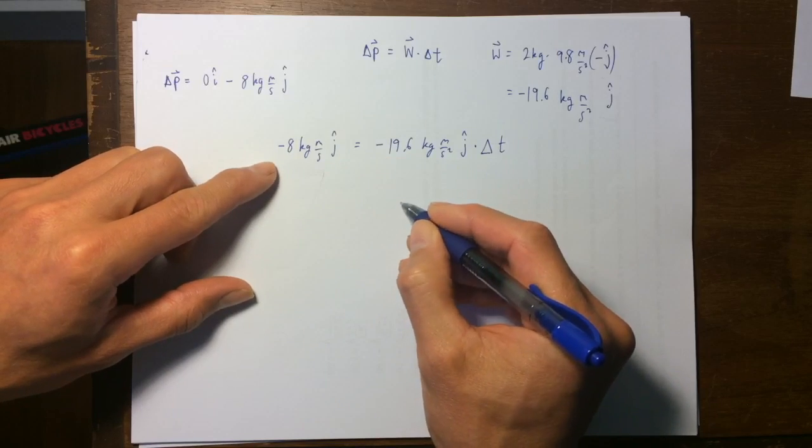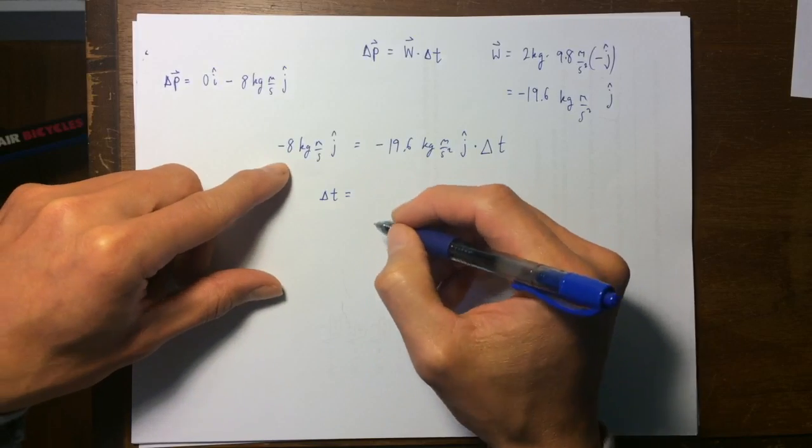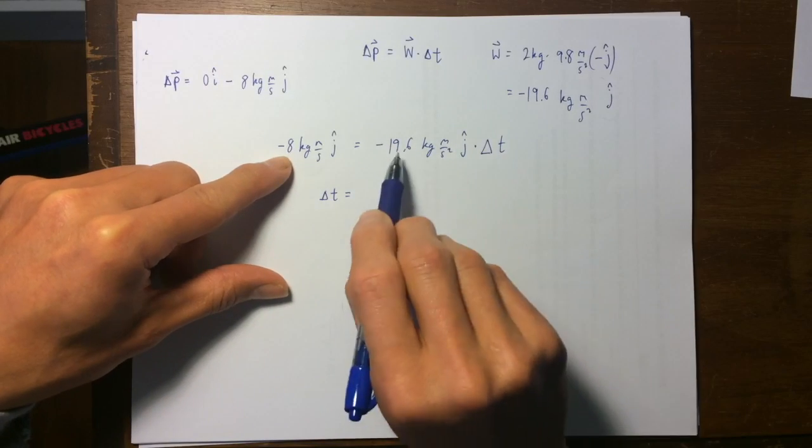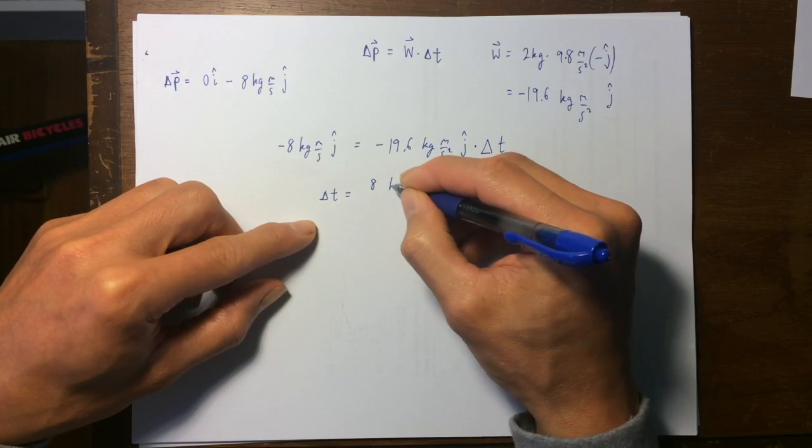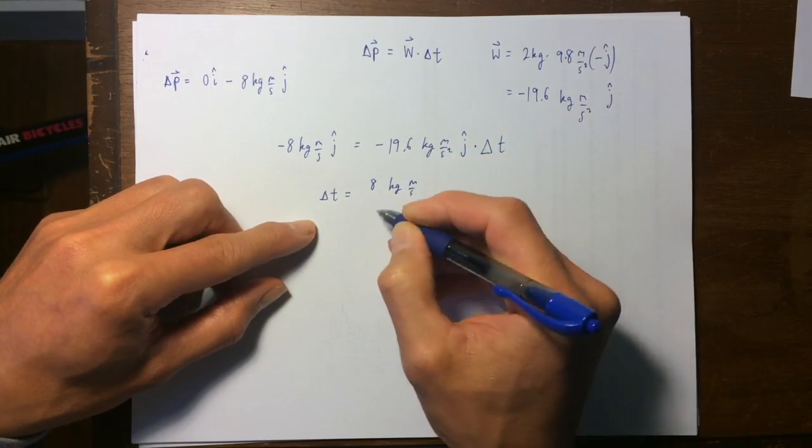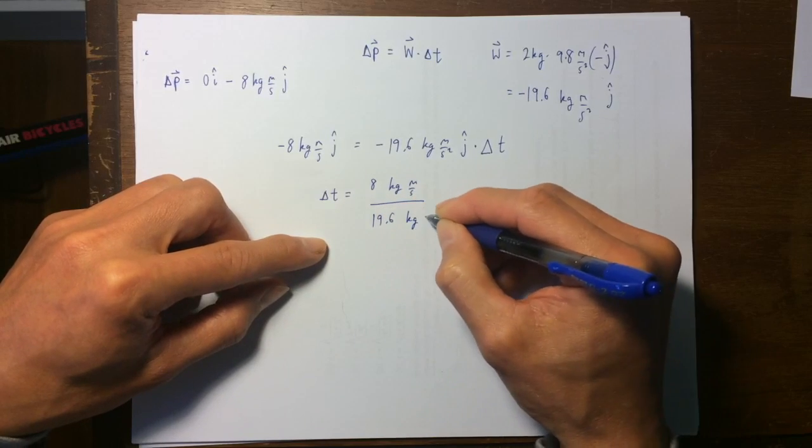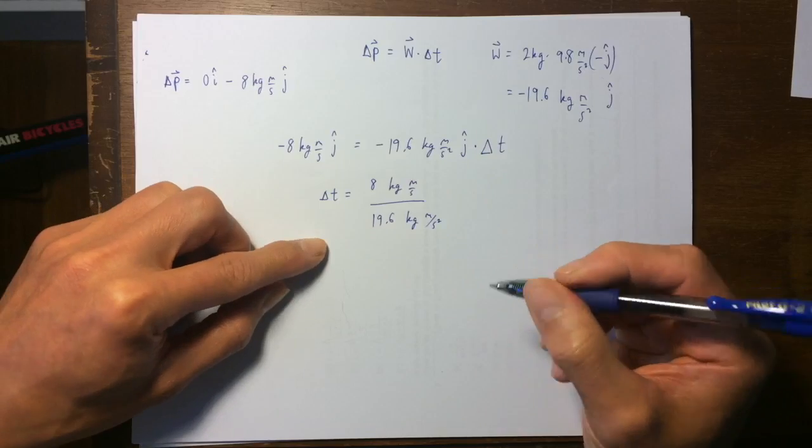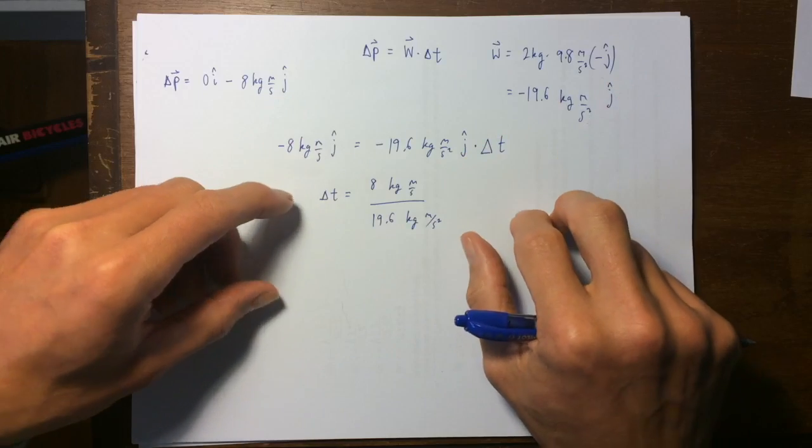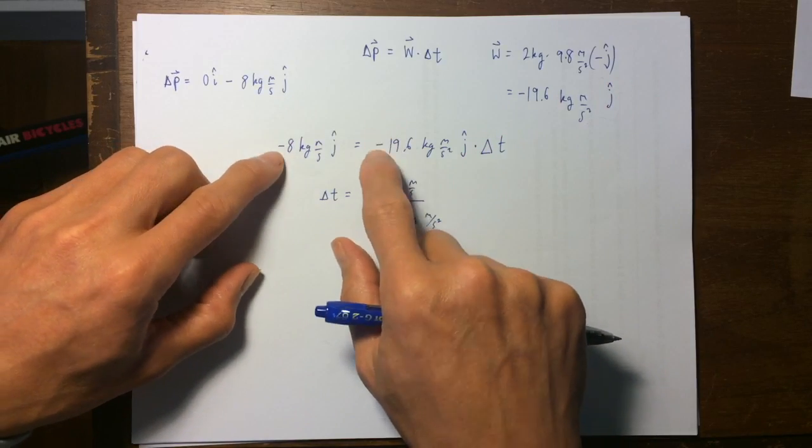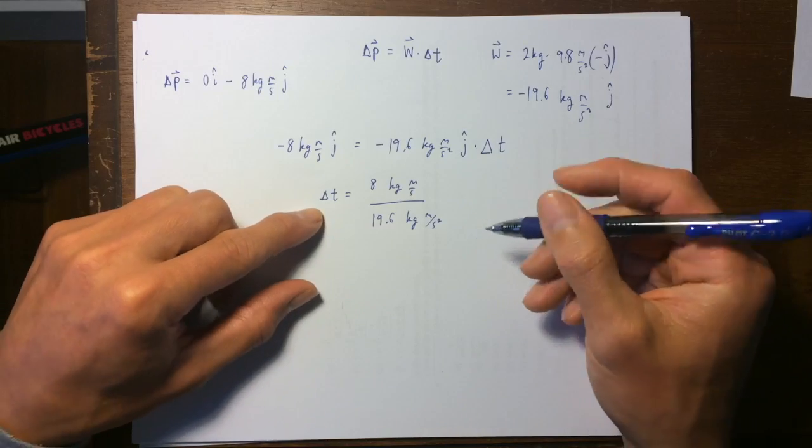So delta t is on this side, we'll be dividing the nineteen point six over to the left hand side, so eight kilograms meters per second divided by nineteen point six kilograms meters per second squared. That's what delta t is, the j hats, we sort of dropped them, they were common, and the minus signs, we dropped them because they're common. So here's delta t.